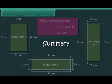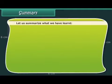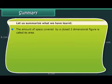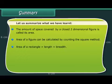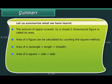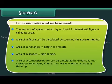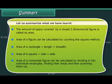Let us summarize what we have learned. The amount of space covered by a closed two-dimensional figure is called its area. Area of a figure can be calculated by the counting the squares method. Area of a rectangle is equal to length multiplied by breadth. Area of a square is equal to side multiplied by side. The area of a composite figure can be calculated by dividing it into individual rectangles, finding their areas, and then summing them up.